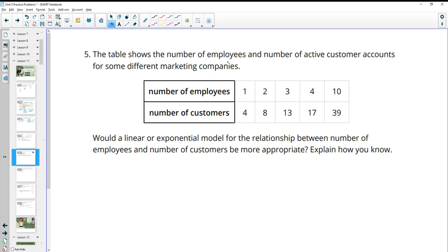Number five, the table shows the number of employees and number of active customer accounts for some different marketing companies. Would a linear or an exponential model for the relationship between the number of employees and number of customers be more appropriate? So remember, a linear model is repeated addition or subtraction versus exponential is multiplication or division would connect those output values, those Y values.